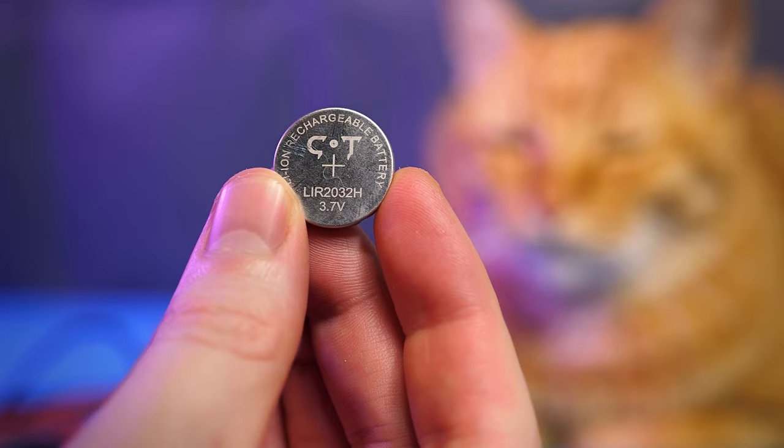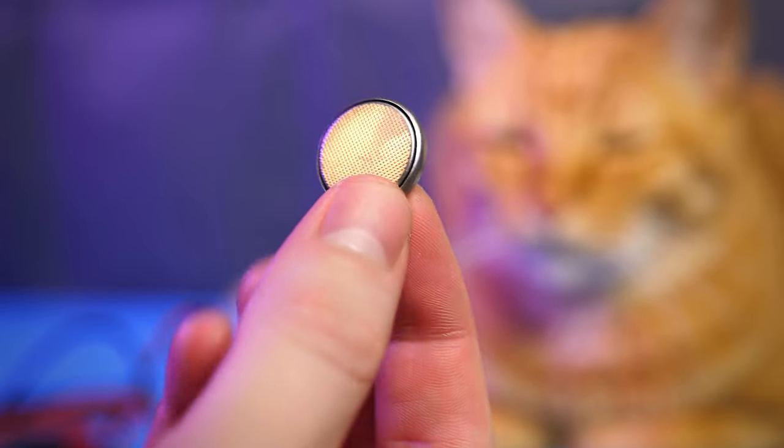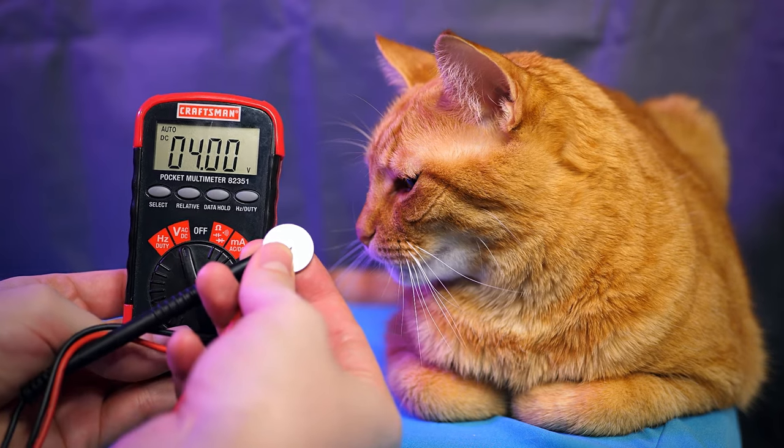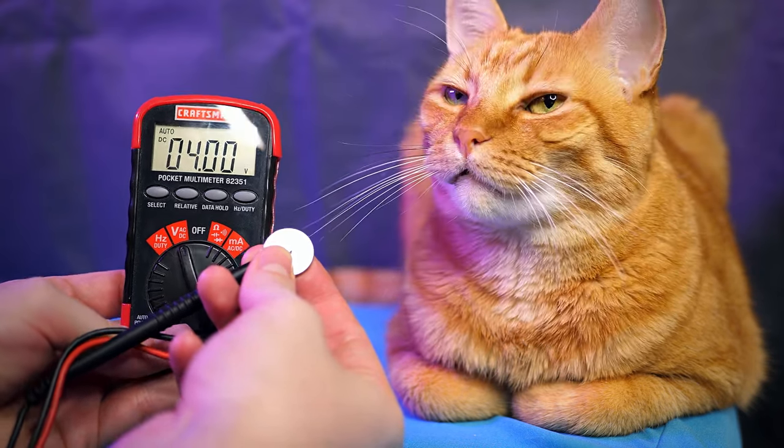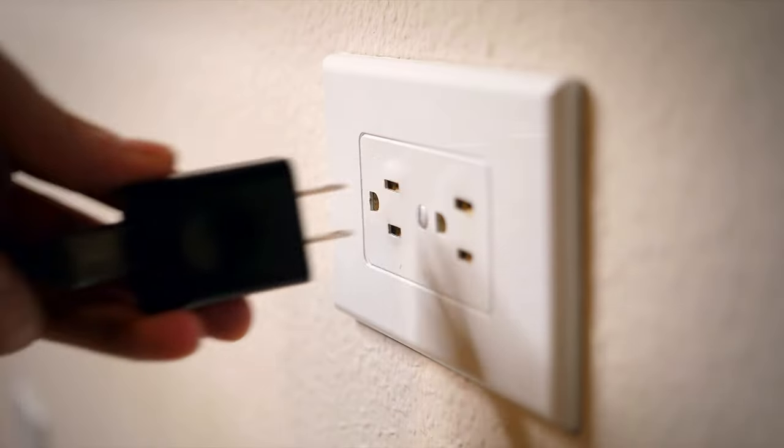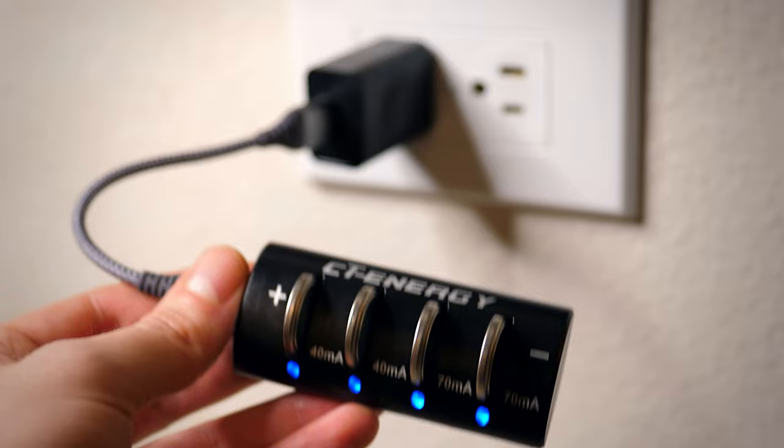So first up, this is the battery that I'm going to be using. It's a 3.7 volt rechargeable button cell battery that, when charged, actually holds a little more voltage, around 4 volts, so that's pretty good. And this charger allows me to charge up to 4 batteries at the same time, so this is great if you're at a conference all day and you need to quickly swap out backup batteries.